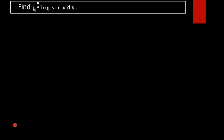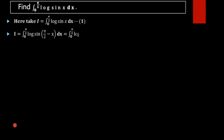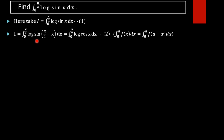First, take I equal to the integral from 0 to π/2 of log(sin x) dx. Next, we use the property of definite integrals: ∫₀ᵃ f(x) dx = ∫₀ᵃ f(a − x) dx. Applying this, we rewrite I as the integral from 0 to π/2 of log(sin(π/2 − x)) dx, which equals the integral from 0 to π/2 of log(cos x) dx.